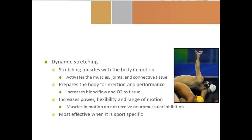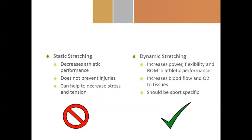Dynamic stretching involves stretching muscles with the body in motion. It activates the muscle, joint, and connective tissue, prepares the body for exertion, increases blood flow and oxygen to tissue, and increases power, flexibility, and range of motion. Muscles in motion do not receive neuromuscular inhibition. Dynamic stretching is most efficient when sport-specific. In summary: static stretching decreases athletic performance and does not prevent injury, though it helps decrease stress and tension. Dynamic stretching increases power, flexibility, range of motion, athletic performance, and blood flow, and should be sport-specific.